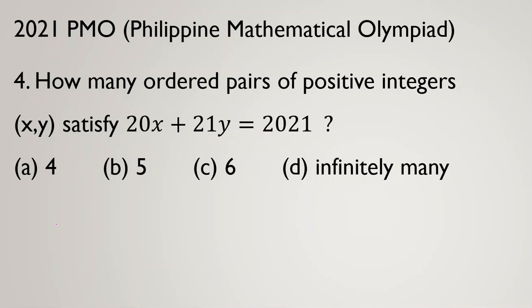Let's focus on the idea. 20x plus 21y equal to 2021. In the first step, you should check 20 and 21, these two numbers, that their GCD is what? And their GCD should divide 2021.